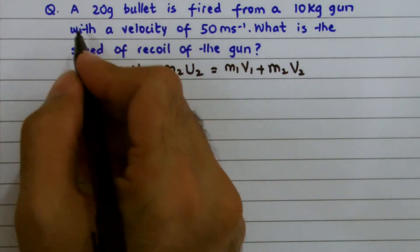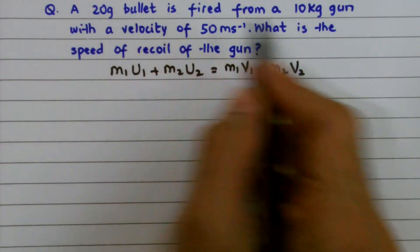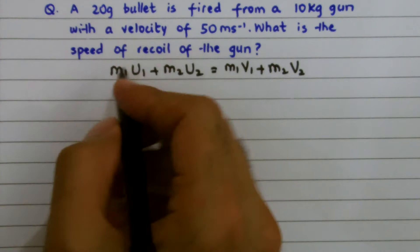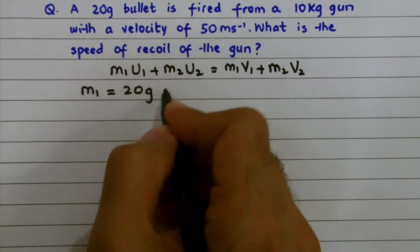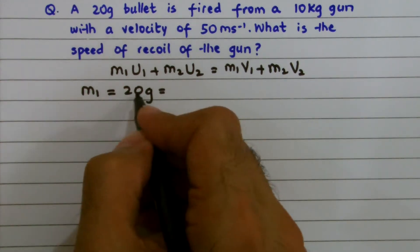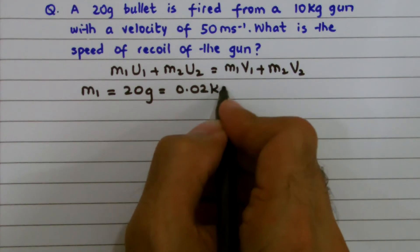I'm given the two masses in this problem: mass of bullet and mass of gun. I consider M1 the mass of bullet, which is 20 grams. It must be converted into kilograms, so I divide this by 1000. I get 0.02 kilograms.